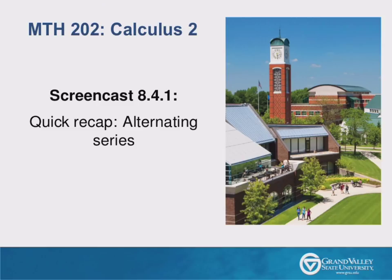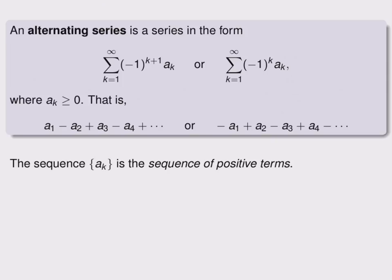Welcome to this quick recap of section 8.4 on alternating series. An alternating series is a special series that has a particular form.